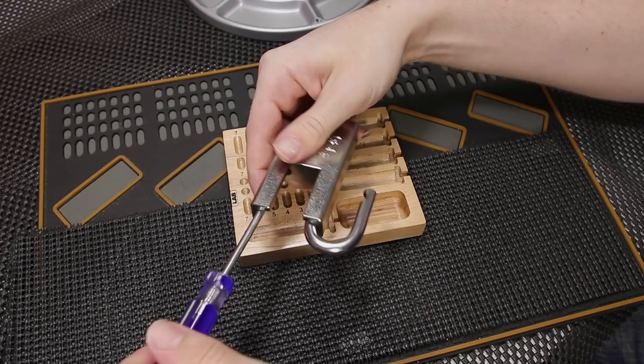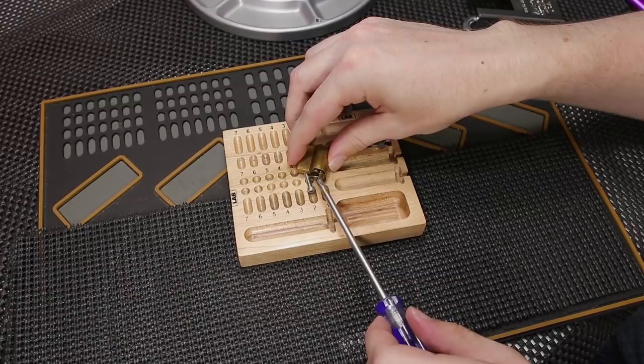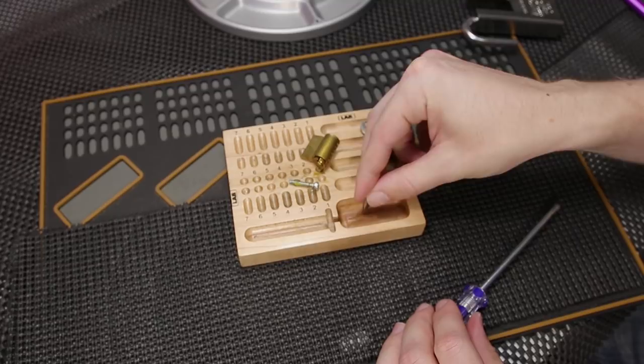So as you do with any other American lock there's a Phillips head screw down here. And you just take that out and then you can get the lock core out. And as you can see what just popped out the back here is the anti-bypass wafer. And now let's get this lock fully taken apart.